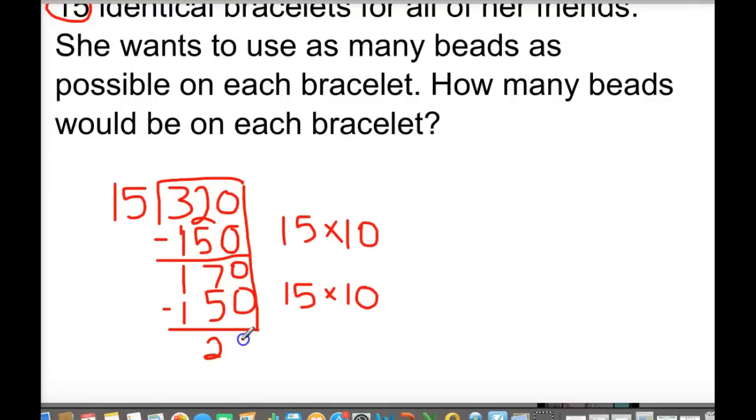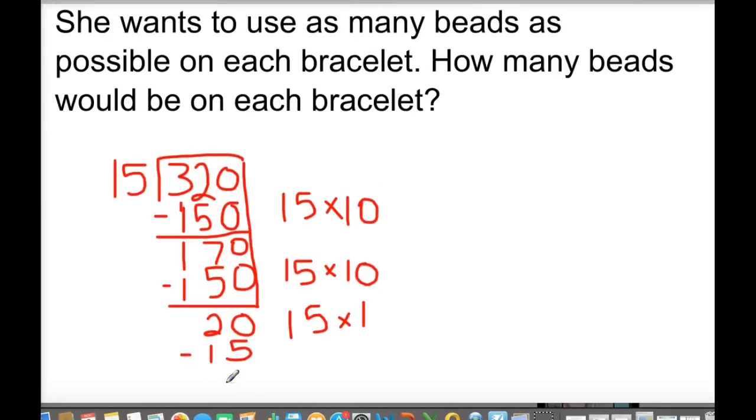I can take another 150 away from that, so I'll do 15 times 10 again. Let's subtract that from 170, and I have 20. Now, can I stop there? No, because 20, I can still take another group of 15 out. I can only take one, but it's another group, so I'm going to have 15 times 1 here. Subtract 15 from the 20, and I would have a remainder of 5.